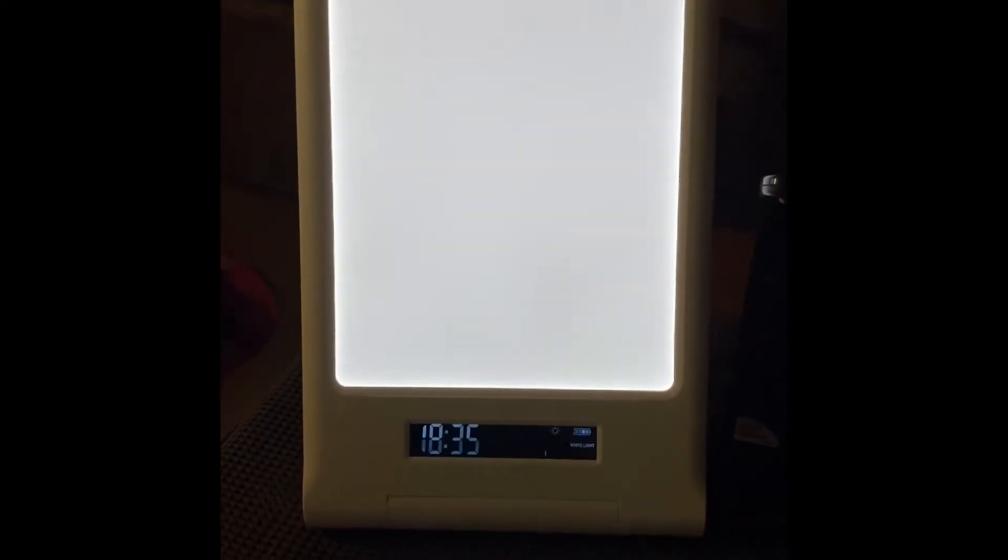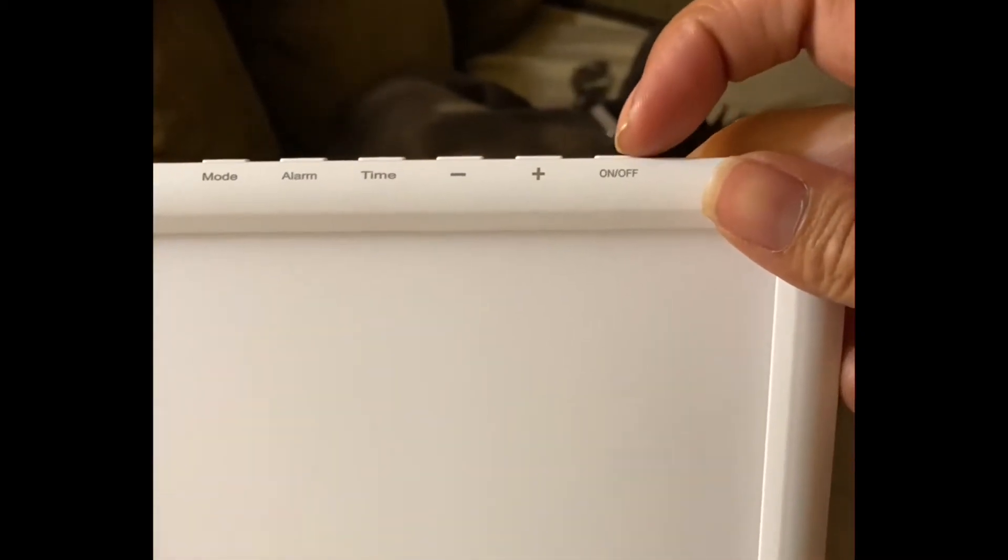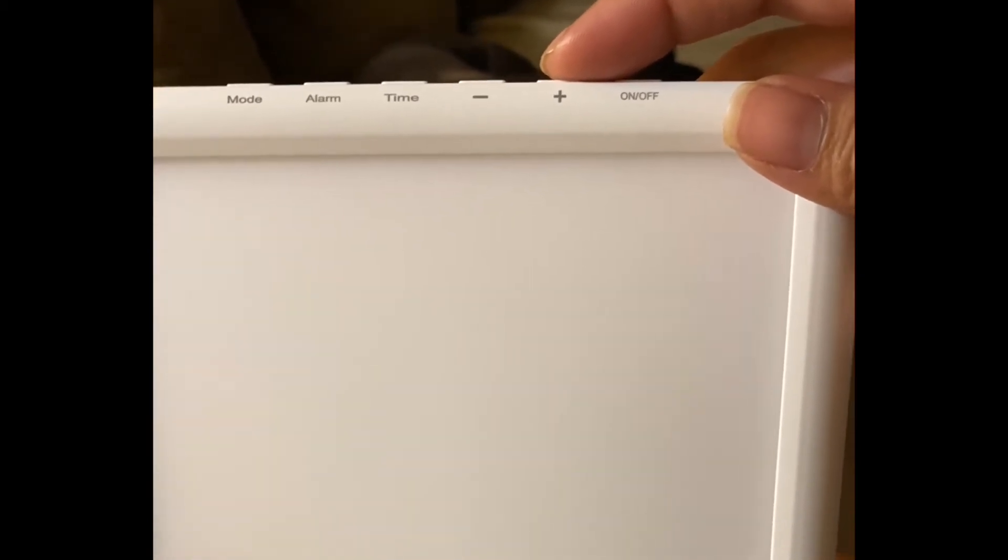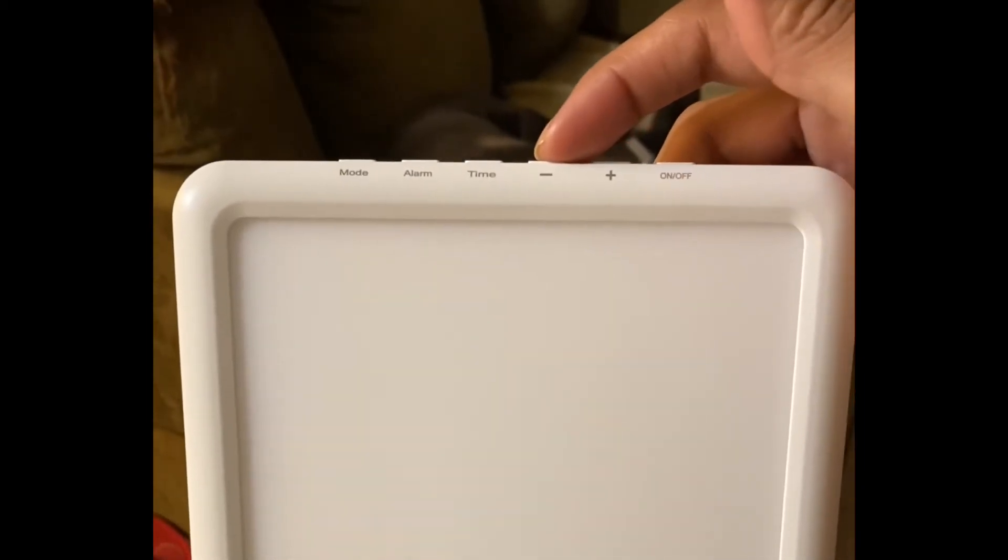So let me go ahead and show you how it works. Up top, you have your on and off. This is where you will increase the brightness intensity. This is where you will decrease the brightness intensity.